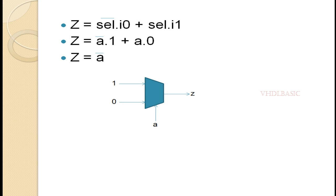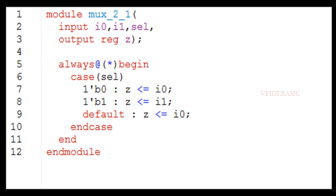We are getting a bar in the MUX output when we connect a to the select line, 1 to i0, and 0 to i1. Now I am going to implement this in Verilog and simulate this, and I will explain the waveform so you can understand clearly.